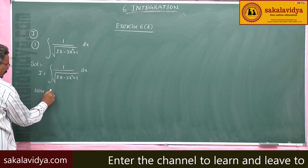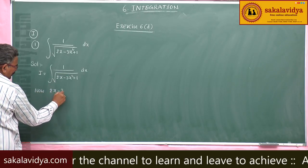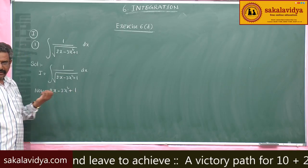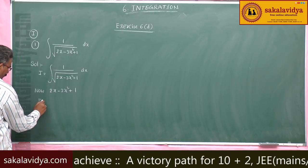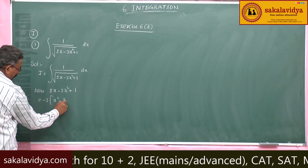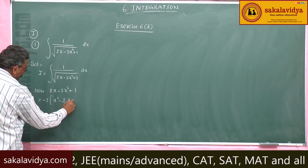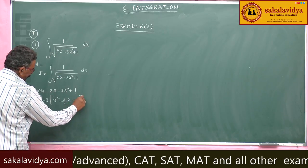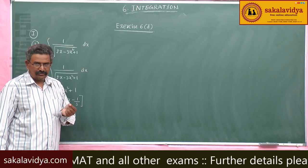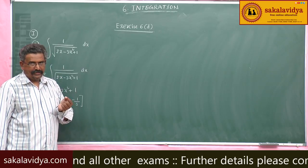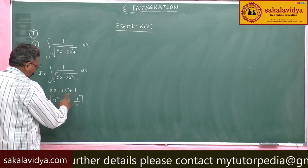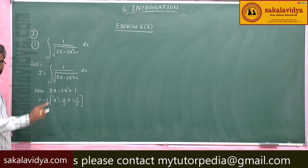From 2x minus 3x squared plus 1, take out minus 3 common. If you take minus 3 common you get x squared minus 2/3 of x and minus 1/3. Now, the x coefficient is minus 2/3; multiply with 1/2 you get 1/3. So, 1/3 whole squared we have to add and subtract.